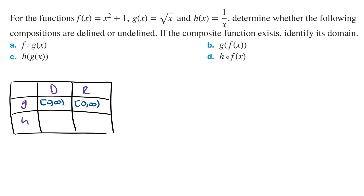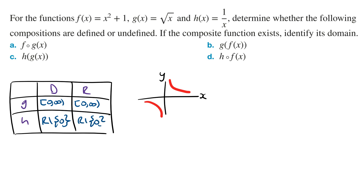Part C: h of g of x. To determine if h of g of x is defined, you need to check whether the range of the inner function g is equal to or a subset of the domain of the outer function h. h of x is a hyperbola — its domain is all real numbers except 0, and its range is also all real numbers except 0. Reading from the table, the range of the inner function g of x is not a subset of the domain of the outer function h of x. So the composite function h of g of x is not defined — it does not exist.